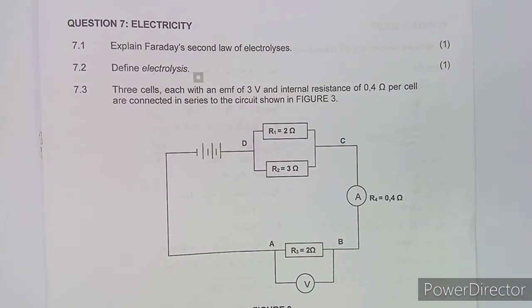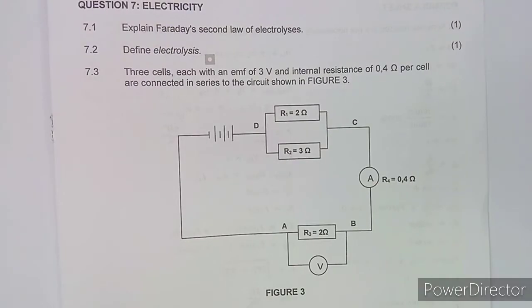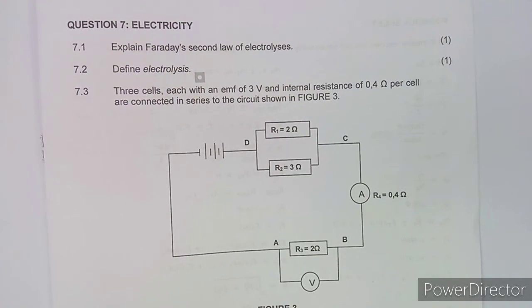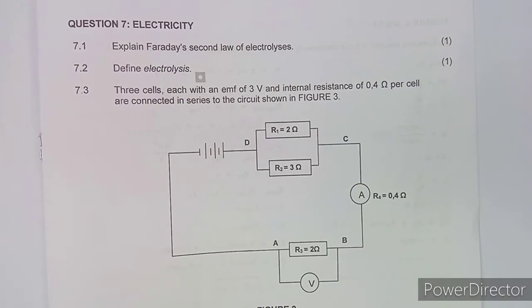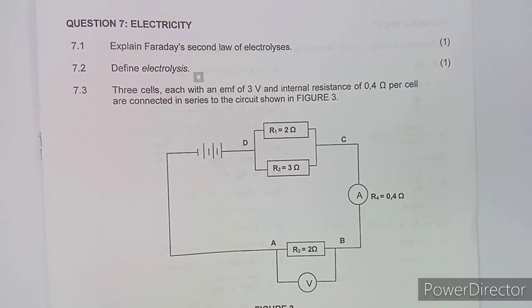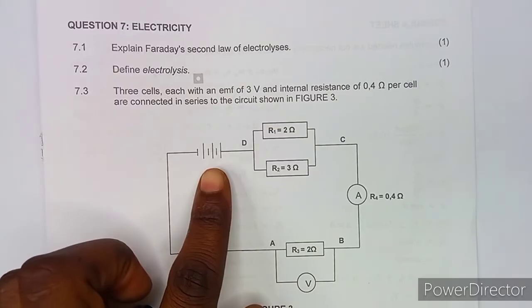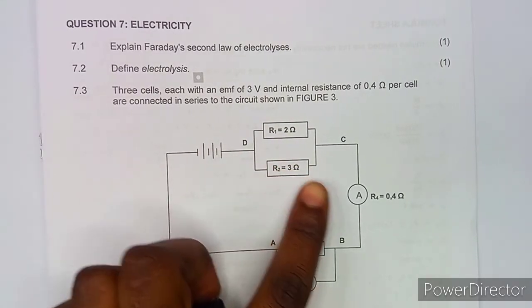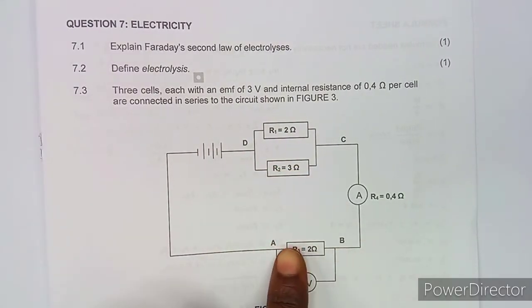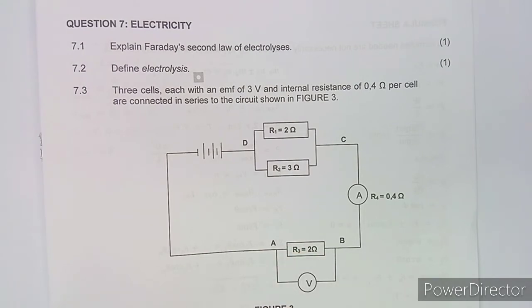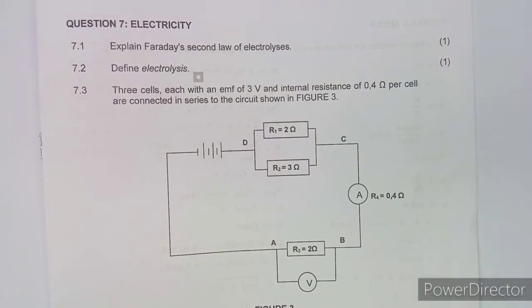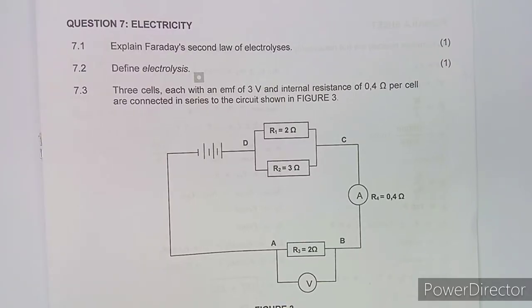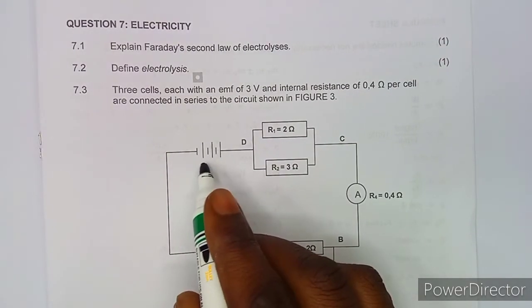Now let's move on to the calculations. Three cells, each with an EMF of 3 volts and internal resistance of 0.4 ohms per cell, are connected in series. There is also a parallel part connected to the series circuit.